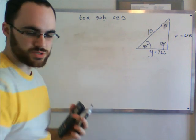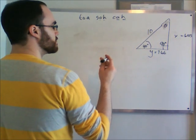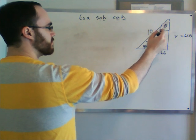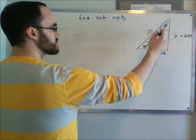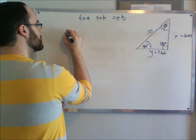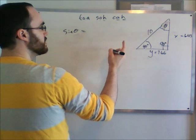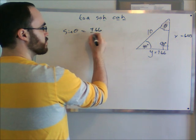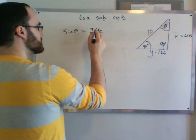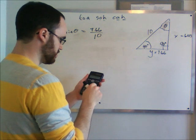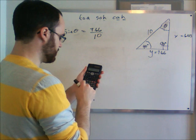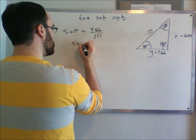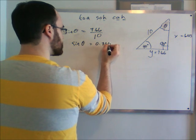The second answer is to use our trig ratios. So let's say this is our angle we want to have now. So sine theta is equal to the opposite, which is 7.66, over the hypotenuse, which is 10. So 7.66 divided by 10 is going to be 0.766. So sine theta equals 0.766.